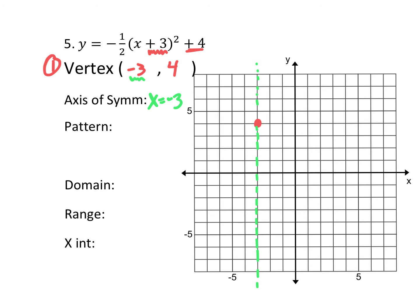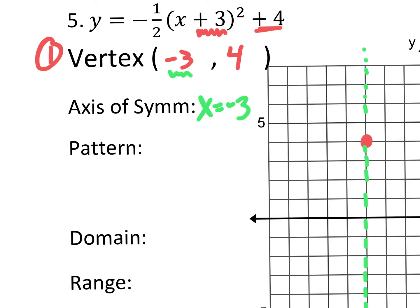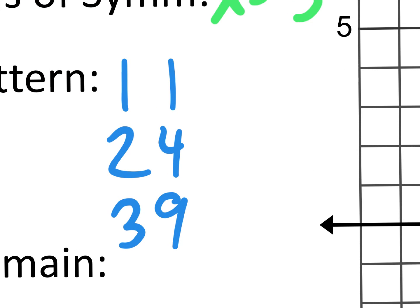Normally we use the pattern 1, 1 / 2, 4 / 3, 9. However, the a value is not 1 — we only use that pattern if a is 1 or negative 1. Here, the a value is negative one half. We need to modify the outputs of this pattern by multiplying by one half. You don't have to multiply by negative one half; just use one half and remember it's opening down. So one times one half is one half, four times one half is two, nine times one half is 4.5.